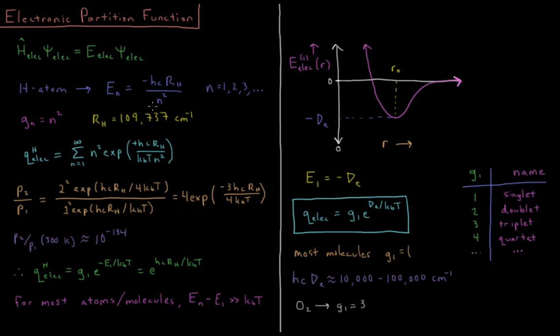That's an enormous amount of energy at the molecular level. So if we want to calculate our electronic partition function for the hydrogen atom, for example, we have a sum from n equals 1 to infinity of the degeneracy, n squared, times the Boltzmann factor e to the minus energy over kT, so e to the hcR over kT n squared.